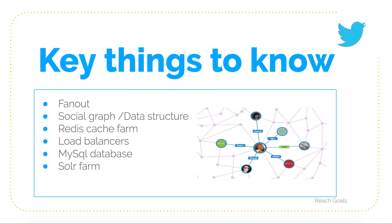Before going to the Twitter design, we have to know certain key things: fanout, social graph, Redis cache, load balancers, MySQL database, and Solr. What is fanout? In the computer industry, if you want to pass information from one machine to multiple machines, that's called fanout — you spread data across multiple machines in parallel without any interruption.